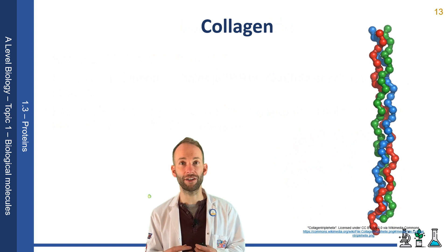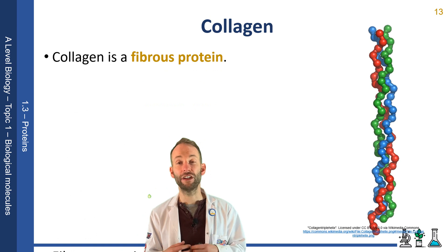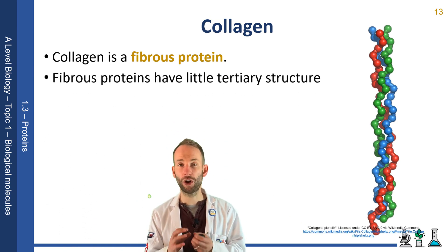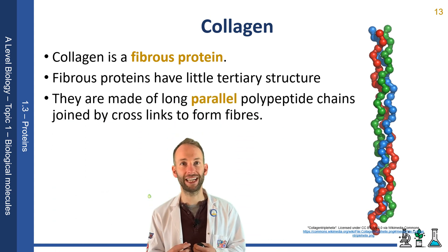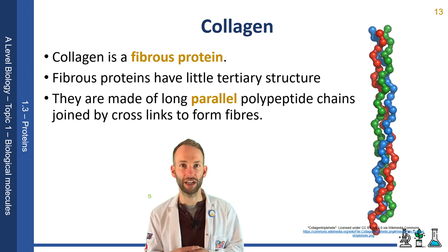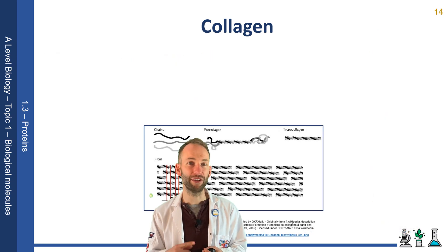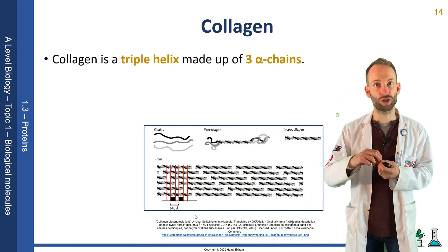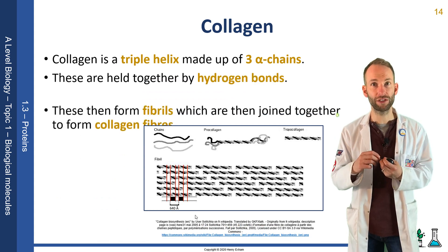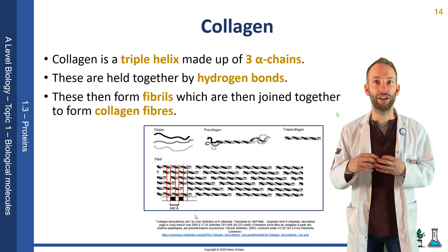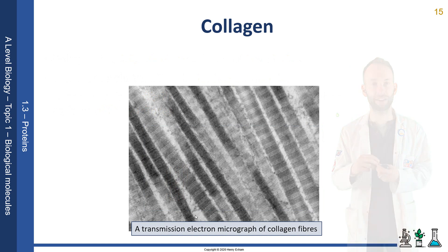Collagen is very different. Even just from the diagram, you can see it's a fibrous protein, not globular. It doesn't have very much tertiary structure — there's not much complex 3D folding going on. They're made of long parallel polypeptide chains joined by crosslinks to form fibres. These collagen fibres are extremely strong, and they're used to help form bones, ligaments, tendons, and skin. Collagen is a triple helix, made of three alpha chains held together by hydrogen bonds. These then form fibrils, which are joined together further to form collagen fibres, giving a really high tensile strength.